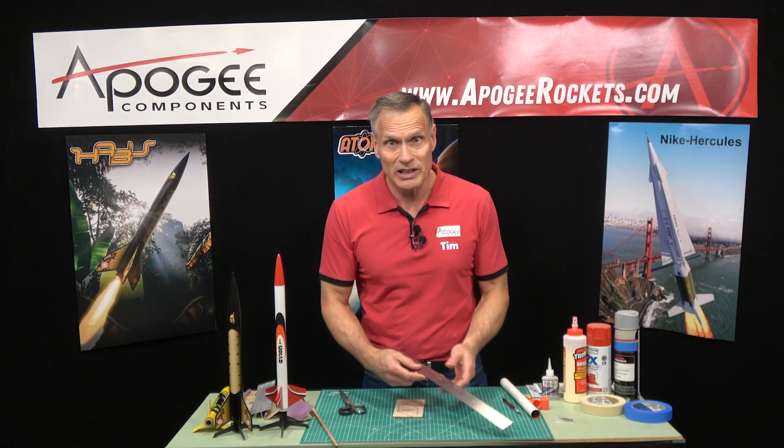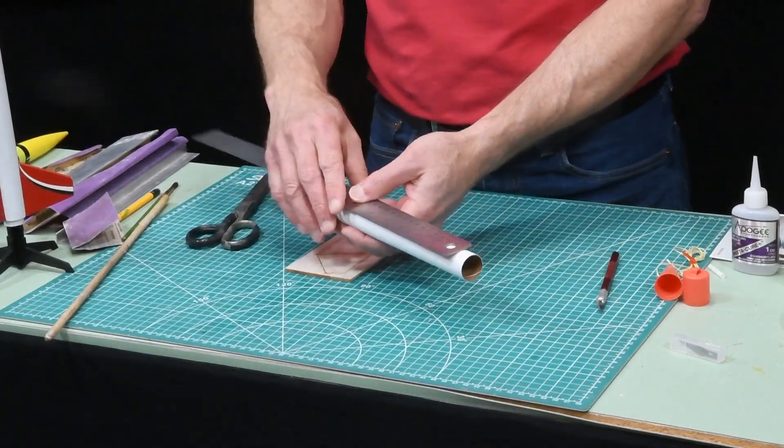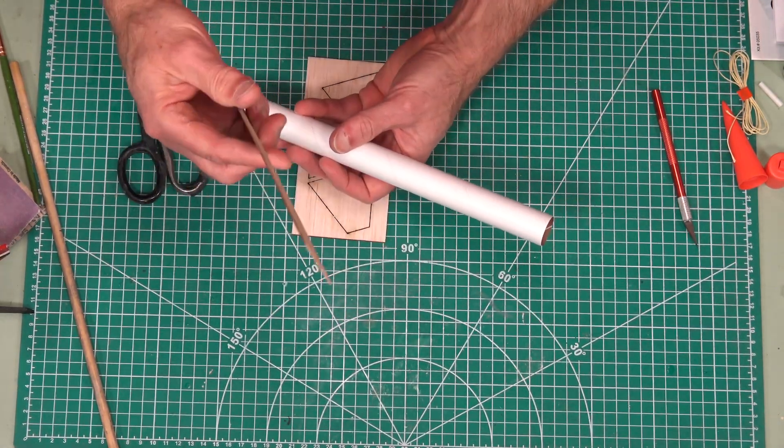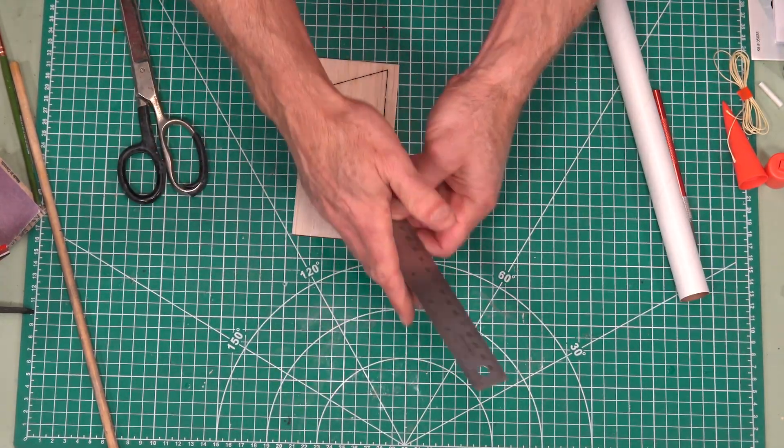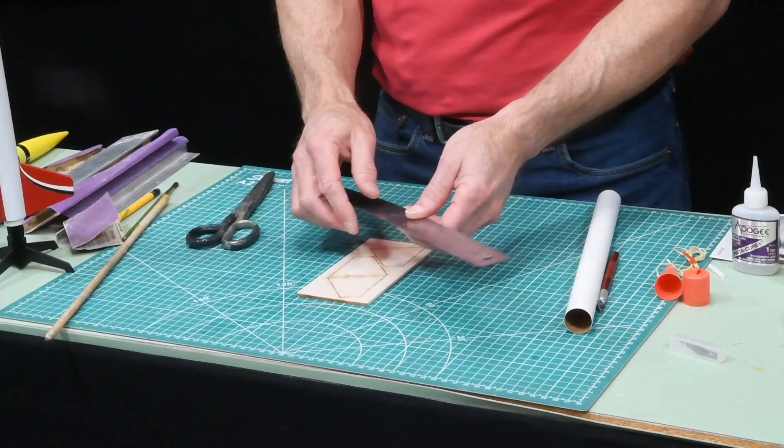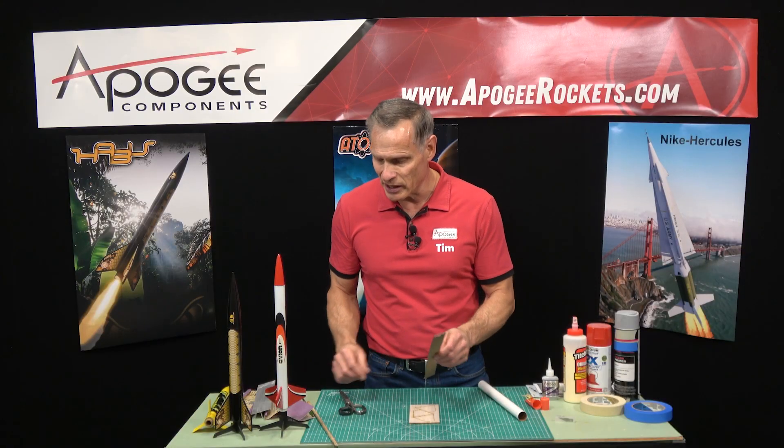Another tool you're going to need is the ruler because you're going to be measuring things. You know the instructions might say make a mark on your tube three inches from one end. So a ruler is really handy. We like rulers with a metal edge because it keeps nice and straight particularly if you're cutting out fins or cutting parachutes out. This is really handy.